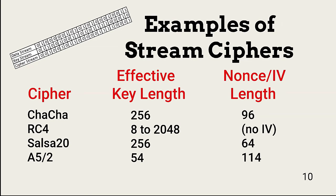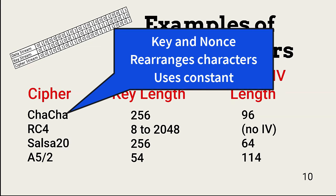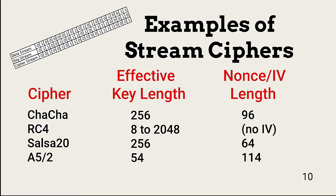These are examples of stream ciphers. What we've looked at so far is the basic operation of stream ciphers, but they're not all made the same. For example, ChaCha, a very popular cipher, uses a key and nonce, but it can also rearrange letters, and it uses a 120-bit constant value. Not all stream ciphers have the same strength, so it's important to understand how stream ciphers and the various approaches work so an organization can select the right one.